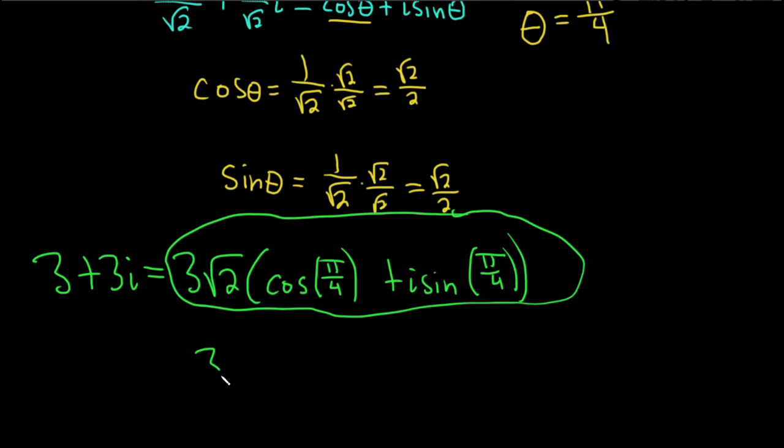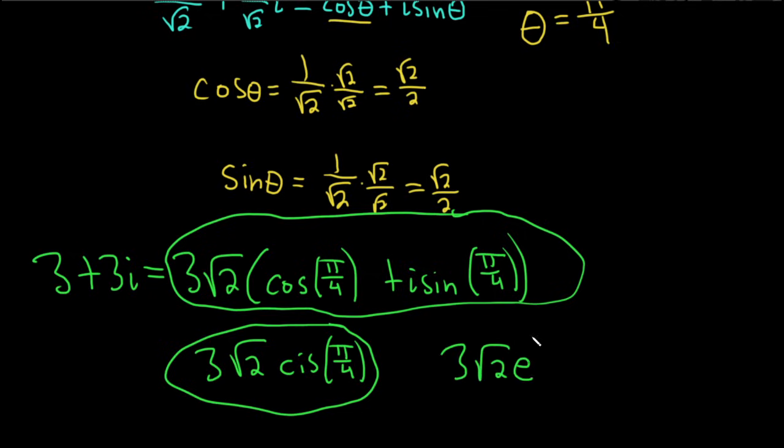Another way would be 3 root 2 cis pi over 4 cosine i sine. That's another answer. So both of these are okay. And then even another way would be 3 square root of 2 e to the i times pi over 4. So three different ways to write the answer. Hopefully this video has been helpful.